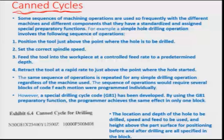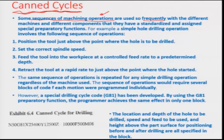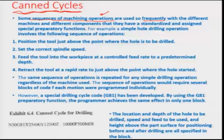Canned cycles are particularly used to define sequences of machining operations, especially those which are very frequently used. It is unnecessary to write a subroutine for a particular machining operation every time; it is better to define it as a G code so that the whole G code in the block gives the complete idea of how the machining will happen. This involves sequencing frequently used machining operations with different machines and components, and standardizing them by assigning special preparatory functions.